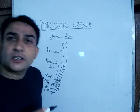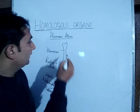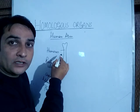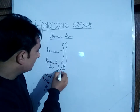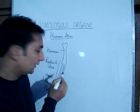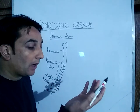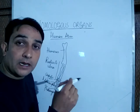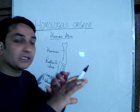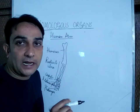So this is the basic plan of the human arm. In the upper arm there is a bone known as humerus. In the forearm there are two bones known as radius and ulna. In the wrist there are small bones known as carpals. In the palm there are bones known as metacarpals, and in our digits there are small bones which we call phalanges.